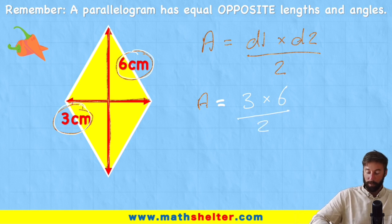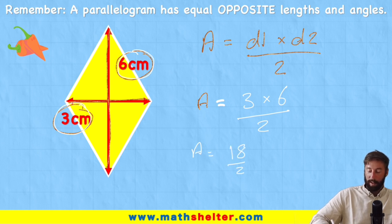Let's do the top rows first of all. And therefore, area equals 3 times 6, which is 18, divided by 2. And therefore, area equals 9 centimetres squared.